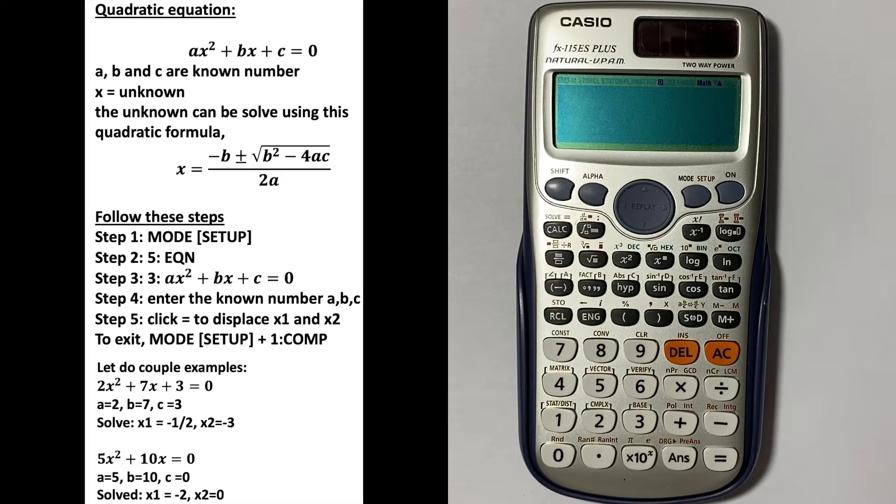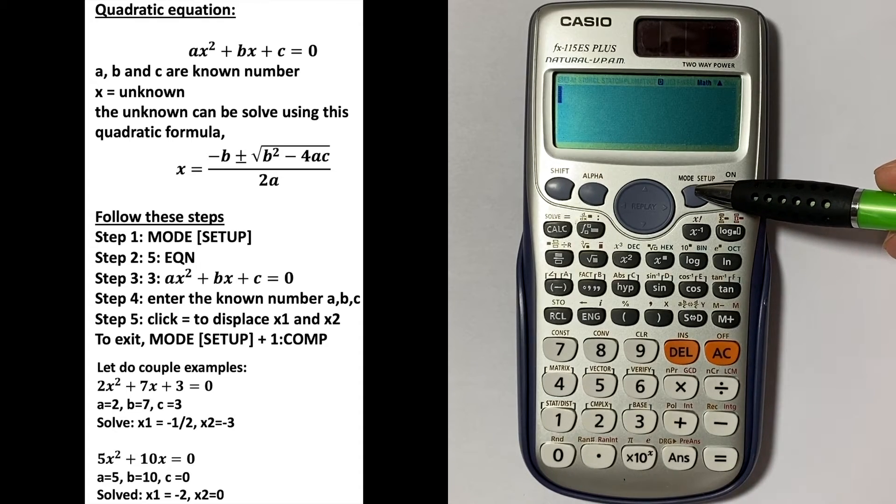The unknown can be solved using this quadratic formula. So to solve using the calculator, let's follow these steps: Mode, then five for equation.